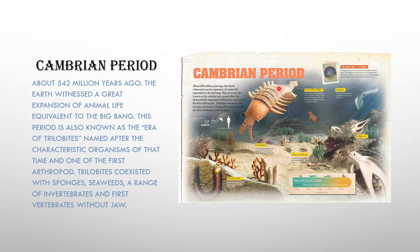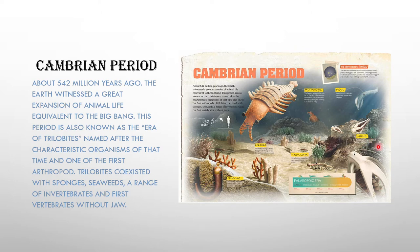The largest animal of that time was two feet long. Another one discovered, which came in the second period, is called Titanokorys gainesi, named after the characteristic organism of the time and one of the first arthropods. Trilobites coexisted with sponges, seaweeds, and a range of invertebrates. This is an invertebrate — it is a worm of the Annelida class.